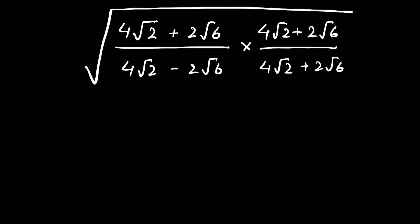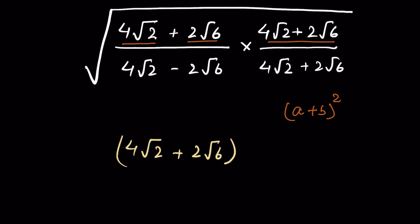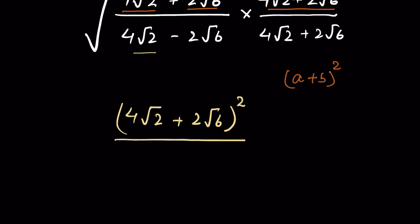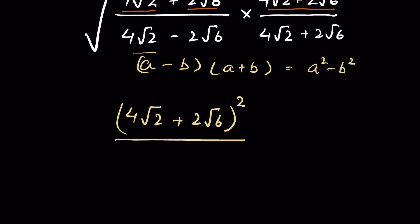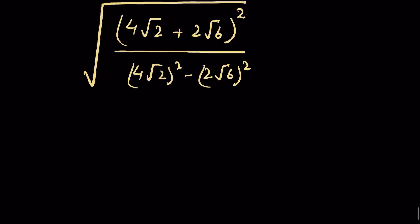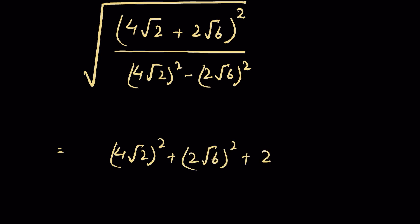Dividing and multiplying by the same number — for example, a upon a equals 1 — so it's like multiplying by 1, we are not changing anything. So we multiply by 4 times square root of 2 plus 2 times square root of 6. Now if 4 times square root of 2 is a and 2 times square root of 6 is b, then a plus b times a minus b equals a squared minus b squared, all under a square root.